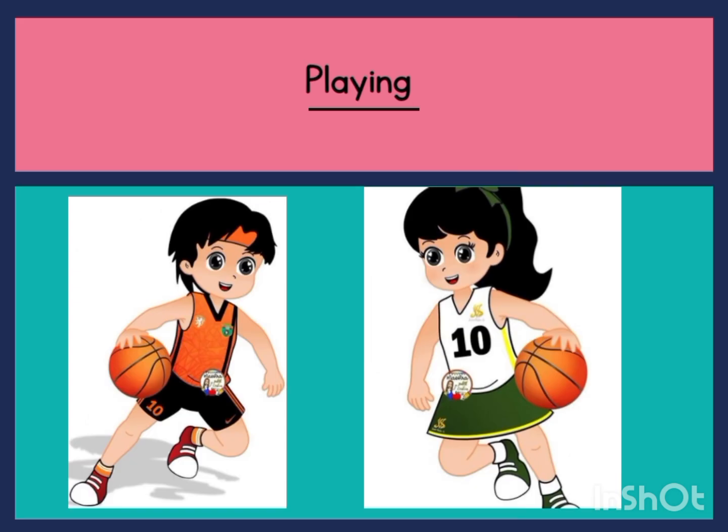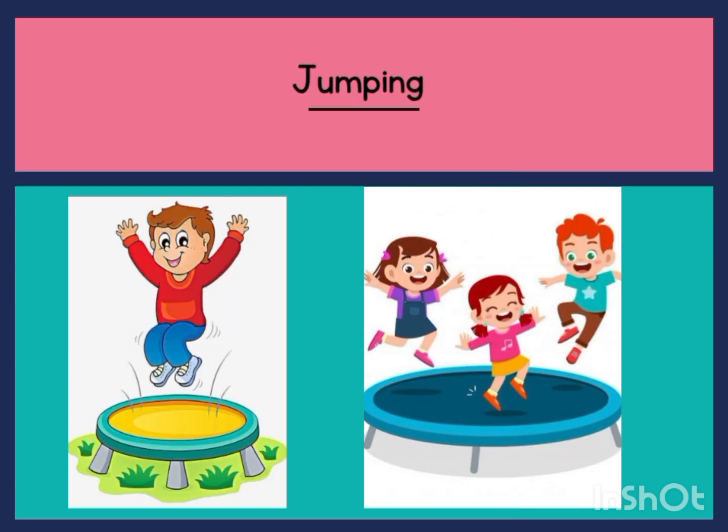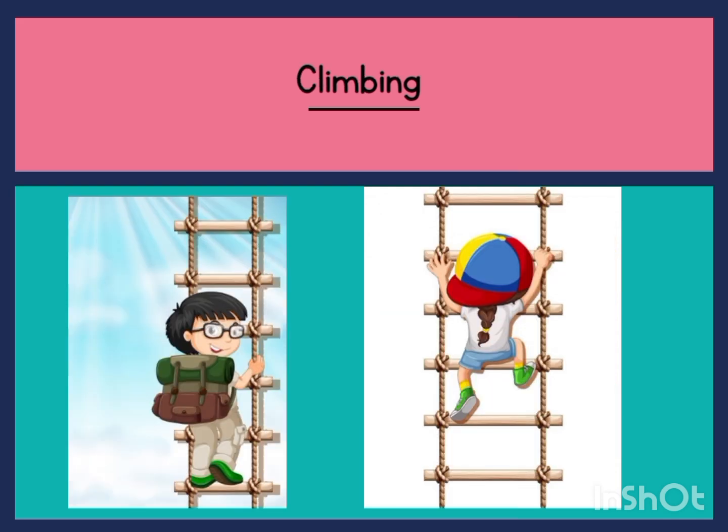Playing — you could see them playing basketball. They are playing. Playing is an action word. Do you love to play as well? Jumping — they are jumping here. Do you also like jumping when you're playing? Jumping is an action word. Let's jump!